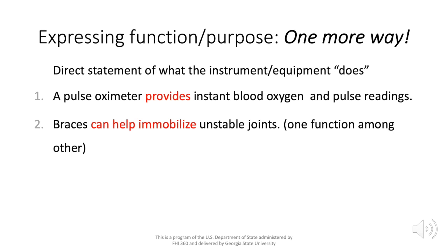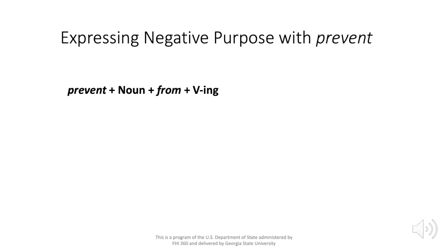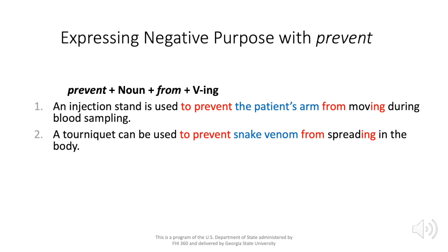Example two: braces can help mobilize unstable joints — that's one of the things braces do. Let's now talk about expressing negative purpose with the verb 'prevent.' Here you have two patterns. The first is 'prevent' plus a noun plus 'from' plus a verb in the -ing form. Example one: an injection stand is used to prevent the patient's arm from moving during blood sampling. Example two: a tourniquet can be used to prevent snake venom from spreading in the body.